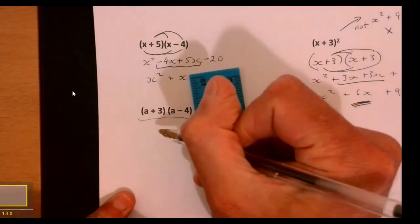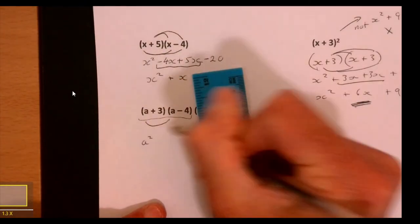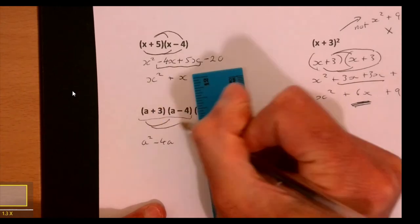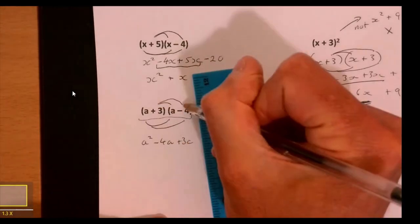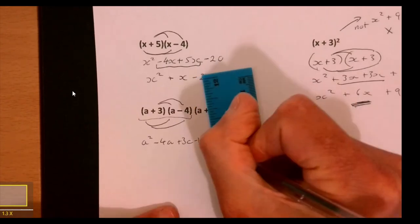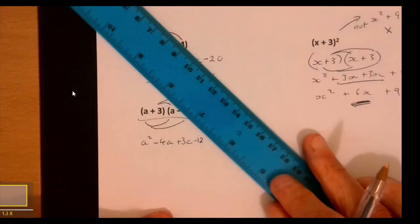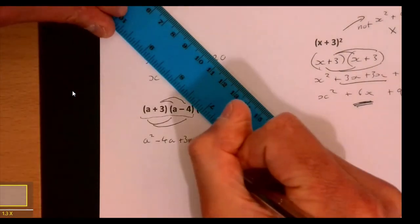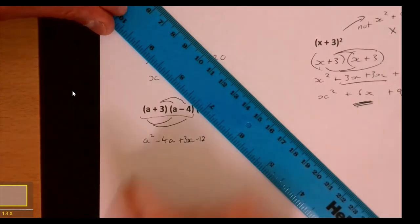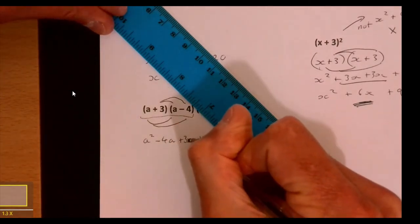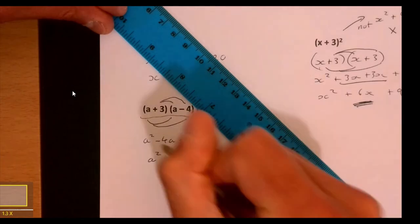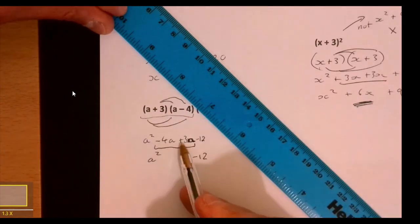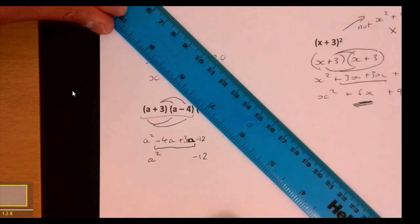A squared minus 4a plus 3a minus 12. What's this bit in here? Minus 4a plus 3a, so I've got minus a. So the answer to this part is a squared minus a minus 12, but we're going to multiply it by a plus 5. We've just got another little step to do.